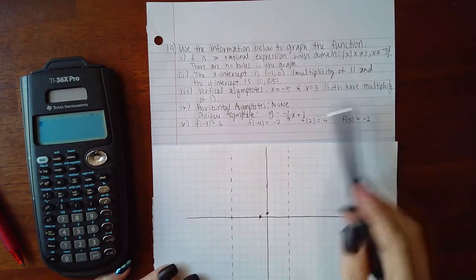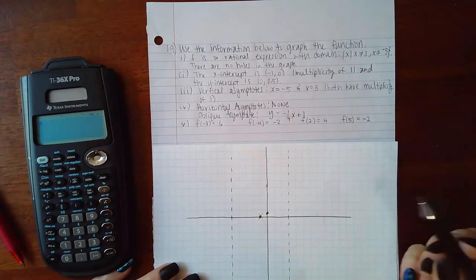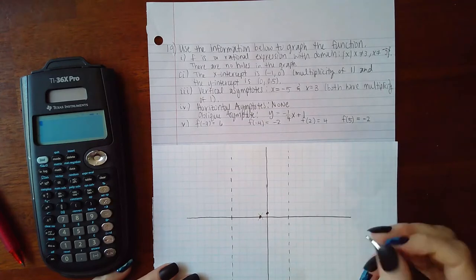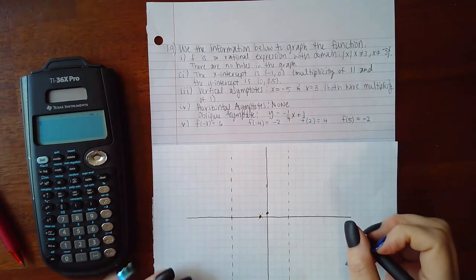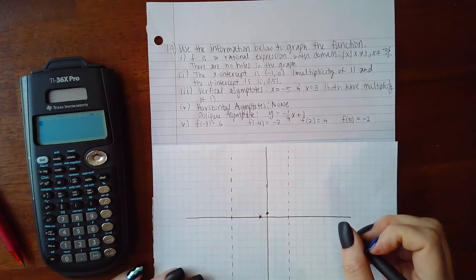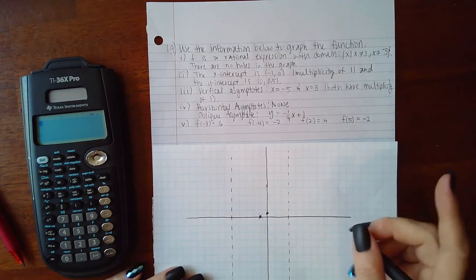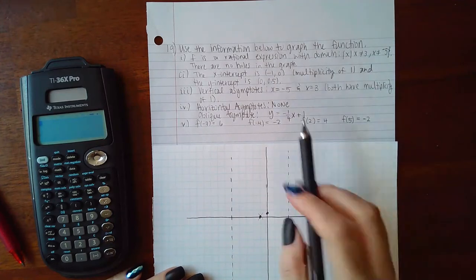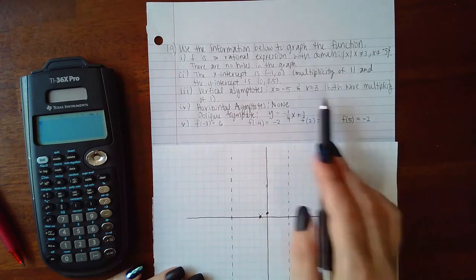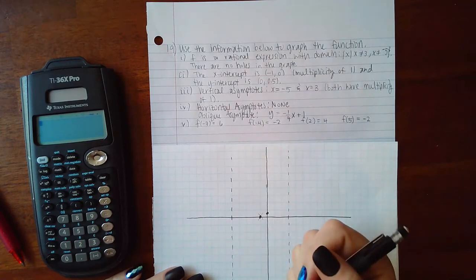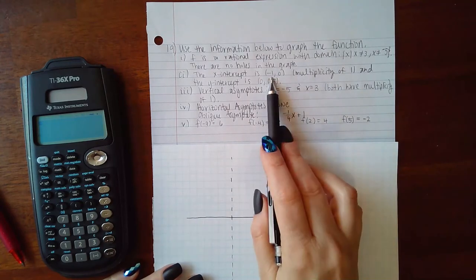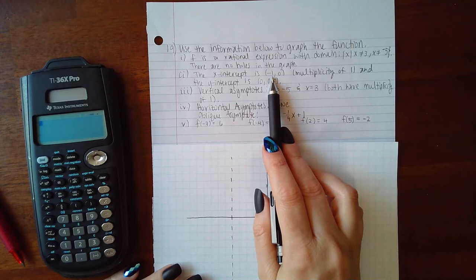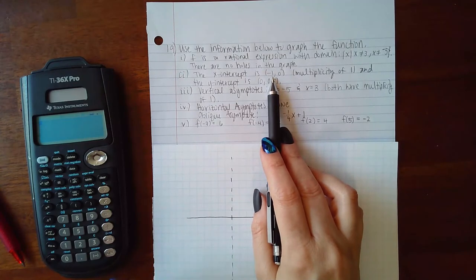And it says both have multiplicity of 1. I'm really not sure of the significance of that statement. Oh yes, I do. If they were to ask me to write the equation, then all that means is that the factors that these two guys came from would have an exponent of 1. Same thing here, the factor that this x-intercept came from would have a multiplicity or a power of 1.